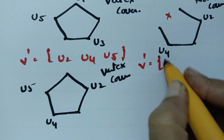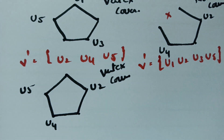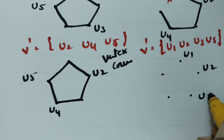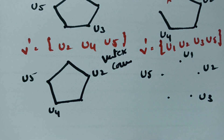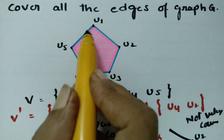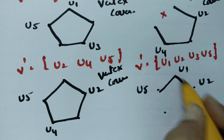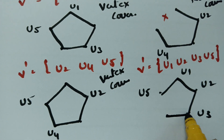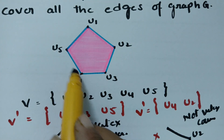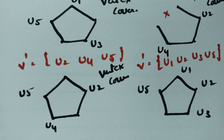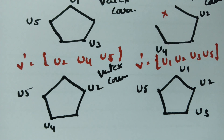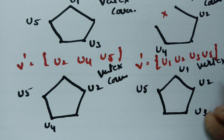Next, V' = {U1, U2, U3, U5}. I am selecting 4 vertices, leaving U4. U1 has 2 edges, U2 has 2 edges, U3 has 2 edges, and U5 has 2 edges. All edges are covered, so this is also a vertex cover.